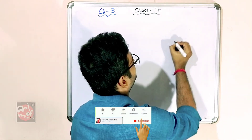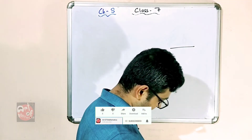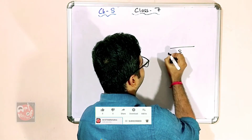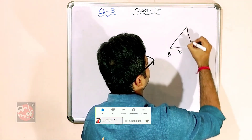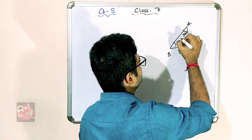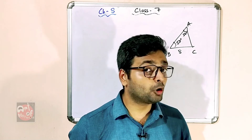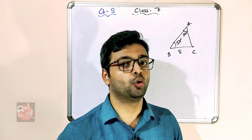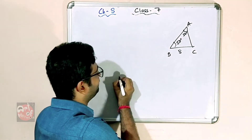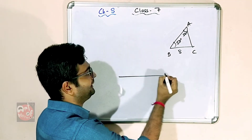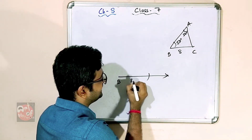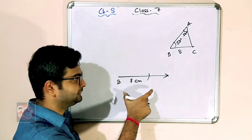BC length is given as 8 centimeters. Angle A is 50 degrees and angle B is also 50 degrees. But tell me, is it possible to construct directly? No. Whenever you are going to do that, first you are going to draw any ray, then from point B you have to cut BC that is 8 centimeters.